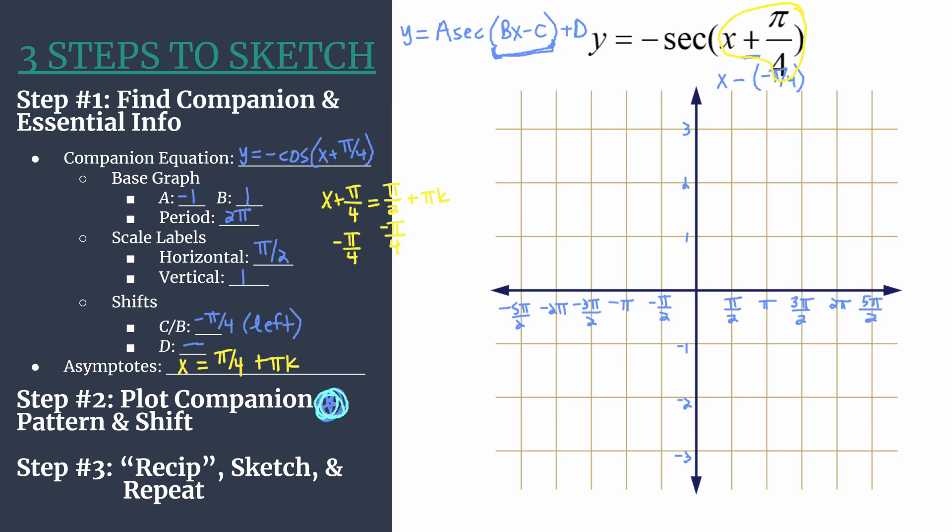So we start still with our point on the y-axis. This is our y-intercept. And you're going to get the y-coordinate simply by looking at the value of a. So that's negative 1. Lightly mark, or in light blue, this is our minimum for our companion graph before shifting.